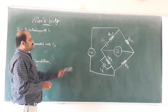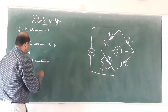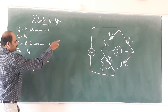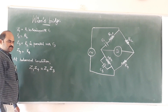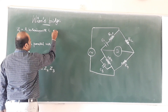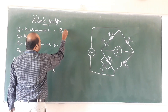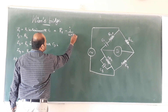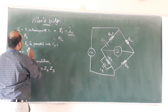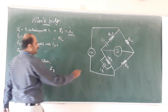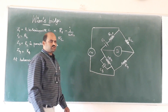We know that the product of opposite arms is equal when the bridge is balanced. So Z1 × Z4 = Z2 × Z3. This is the balanced condition. Substituting the values: Z1 = R1 − j/(ωC1), Z2 = R2, and Z3 is R3 in parallel with C3. Since Z3 has parallel components, it is not straightforward to compute directly.